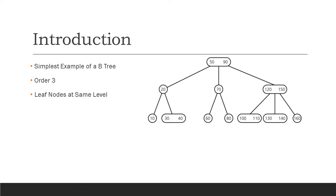To be more specific, 2-3 trees are B-trees of order 3, which means that at most they can have three children in a single node. One prominent characteristic of 2-3 trees is that all the leaf nodes, regardless of the number of leaf nodes, must be at the same level, which means that the height is always balanced in a 2-3 tree.